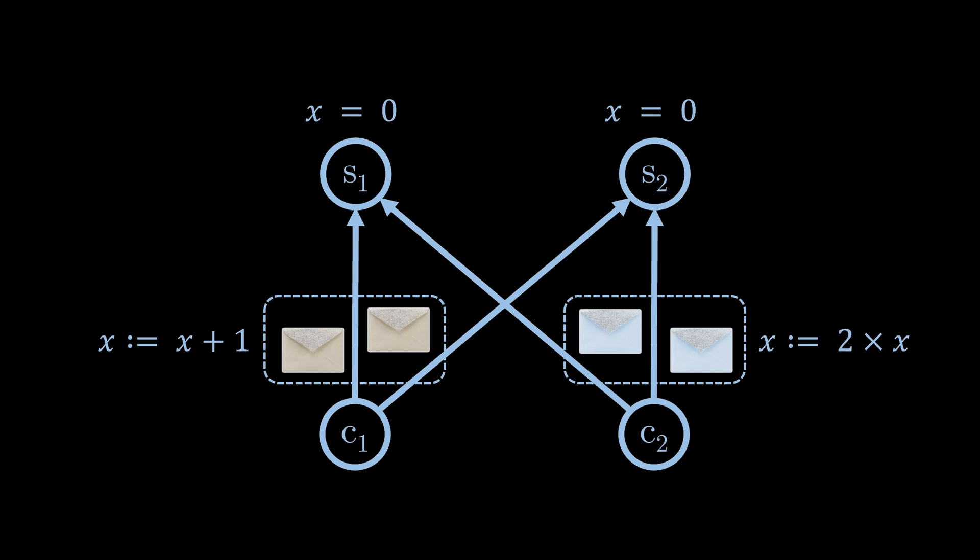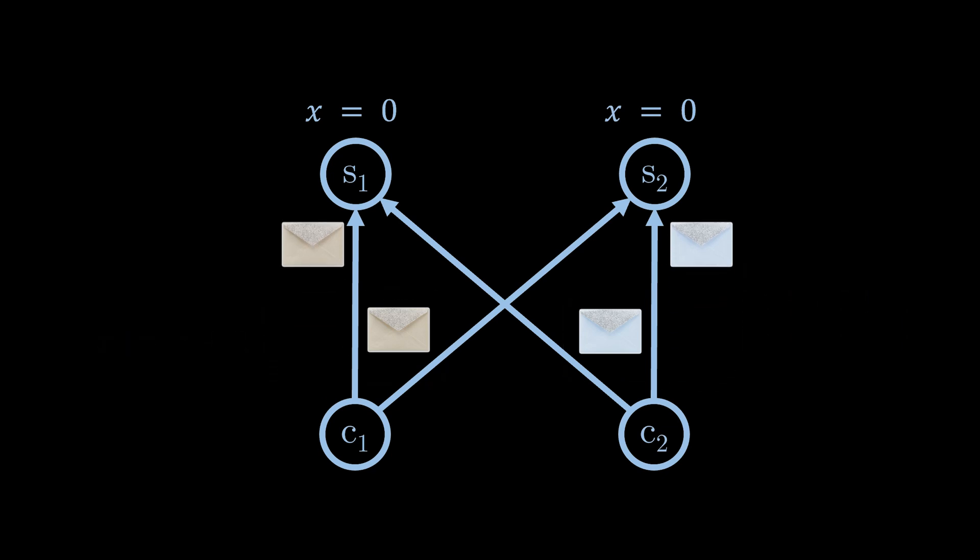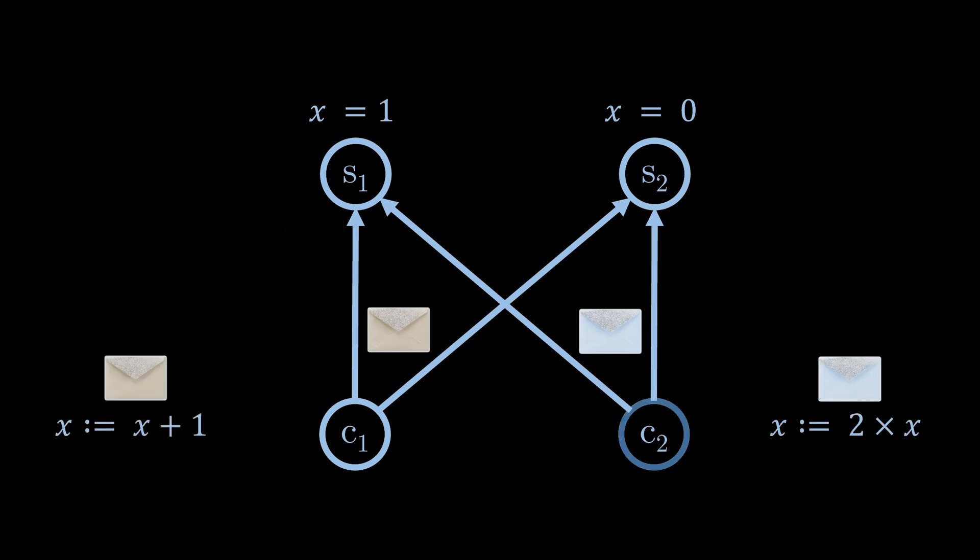For example, client 1 wishes to increment x and client 2 wants to multiply x by 2. It may happen that the command of client 1 arrives at server 1 first and the command of client 2 arrives at server 2 first. As a result, server 1 increments x by 1 resulting in x equals 1.